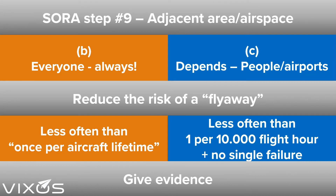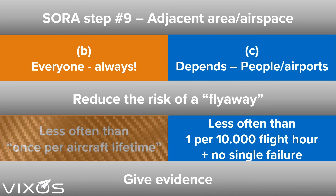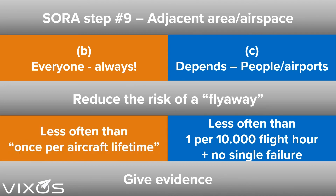Let's summarize what we have learned about SORA step number 9 on adjacent area and airspace. It comes in two parts: part B, which applies to everyone and always, and part C, which applies in some circumstances such as flying close to people or airports. The purpose is to reduce the risk of a flyaway to an acceptable level. For part B this level is less often than once per aircraft lifetime, and for part C it is less often than once per 10,000 flight hours, and that no single failure can lead to a flyaway.